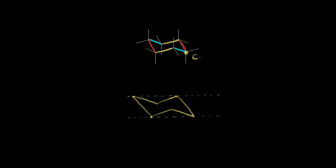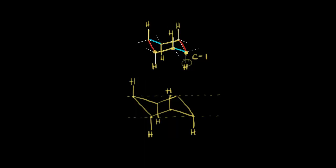This turns out to be carbon one right here — we'll see why in the next video. We're going to put in our groups; in this case just hydrogens. At carbon one we're starting axial down this time — the opposite of what we did in the other chair conformation where we started axial up. So we put a hydrogen going down at carbon one. Carbon two is axial up. Carbon three is axial down. Carbon four should be axial up. Carbon five axial down. And finally carbon six is axial up.